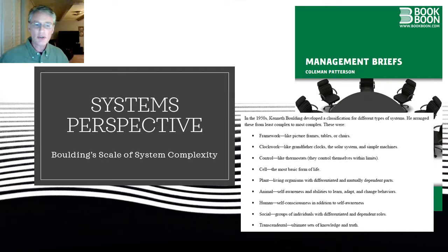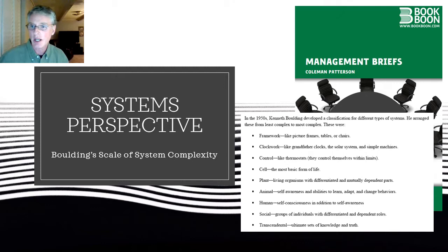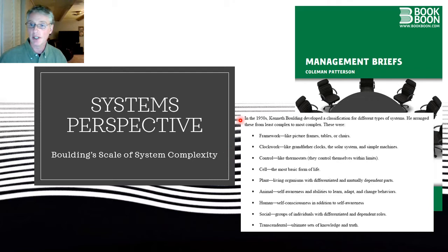As you go through the chapter, really spend a lot of time especially on page 13 — that exhibit 1.5 has a lot of stuff in it: open systems as compared to closed systems. Also refer to the management briefs, a little collection I wrote for our newspaper for a couple of years, then compiled and sent off to BookBoon around 2010. I think it's the fourth reading from the beginning, introducing this idea of Kenneth Boulding and his scale of system complexity.